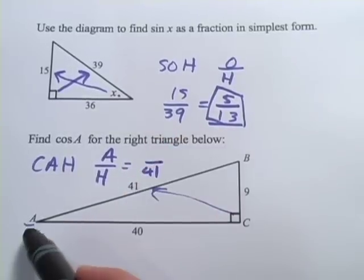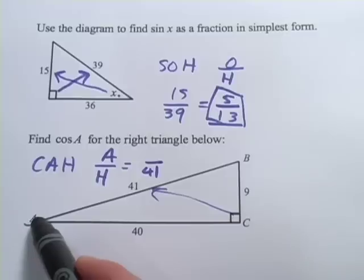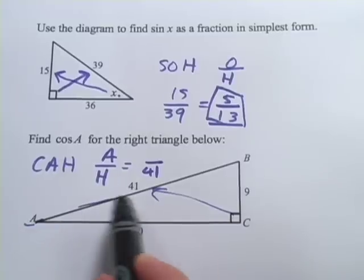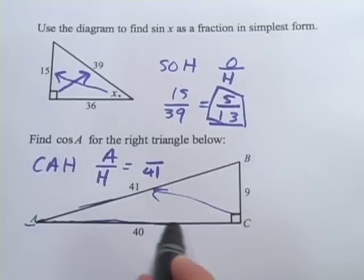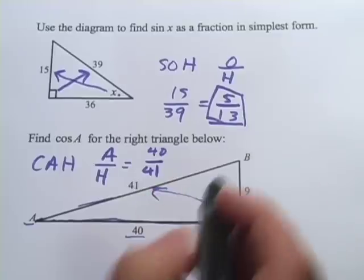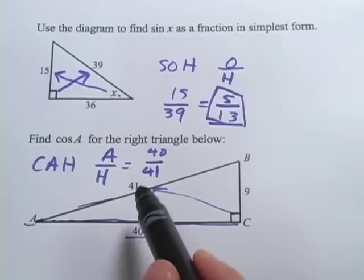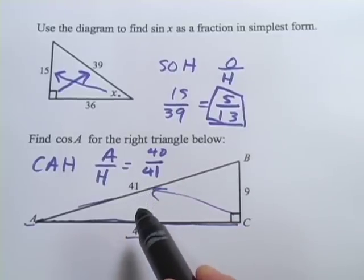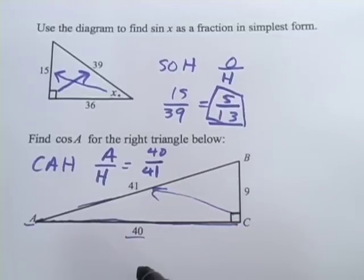But what's the adjacent side to A? Well, you'll see A here is next to the hypotenuse, but that's not it because that's the hypotenuse. It's also next to this side right here, and that's 40. So the cosine of A is 40/41. And that's the sine and cosine ratio. Thank you.